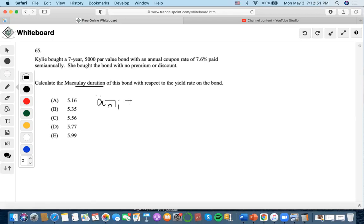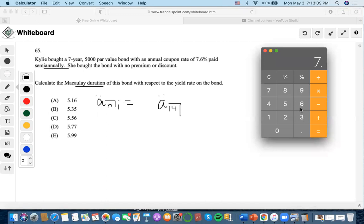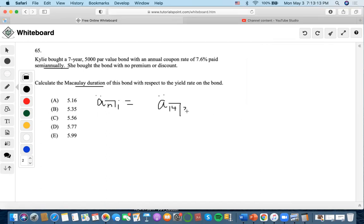So what we're going to do is, it says a semi-annual coupon rate, so at 7 years, 7 times 2 equals 14, and 7.6 divided by 2 equals 3.8. So now let's convert this.